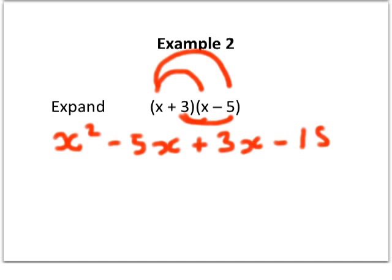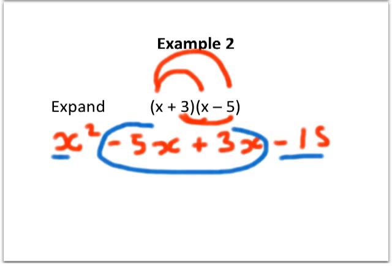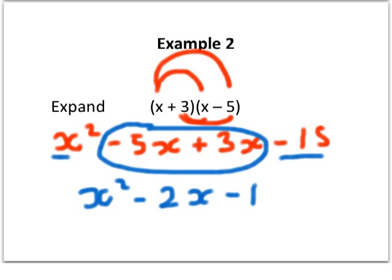We need to simplify. We've got x squared and minus 15 — there's nothing we can do with those. But the bit in the middle we can simplify: minus 5x plus 3x is minus 2x. So the expanded and simplified answer is x squared minus 2x minus 15. Just make sure you underline your answer.